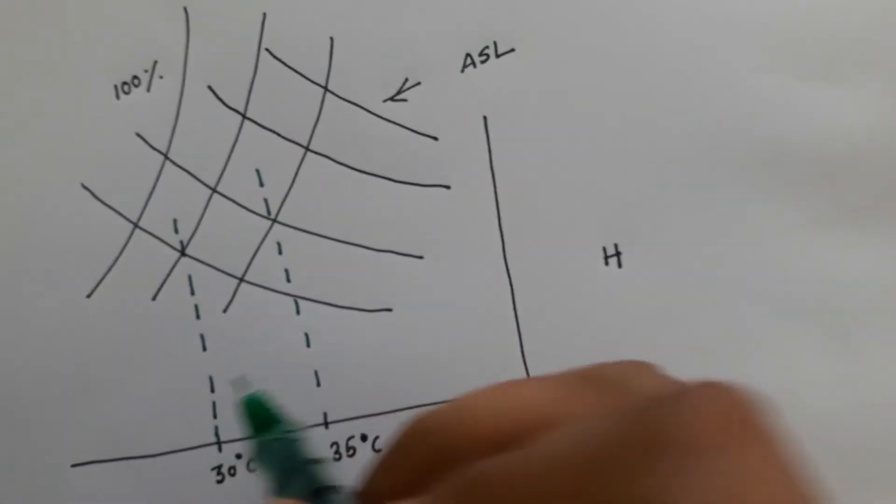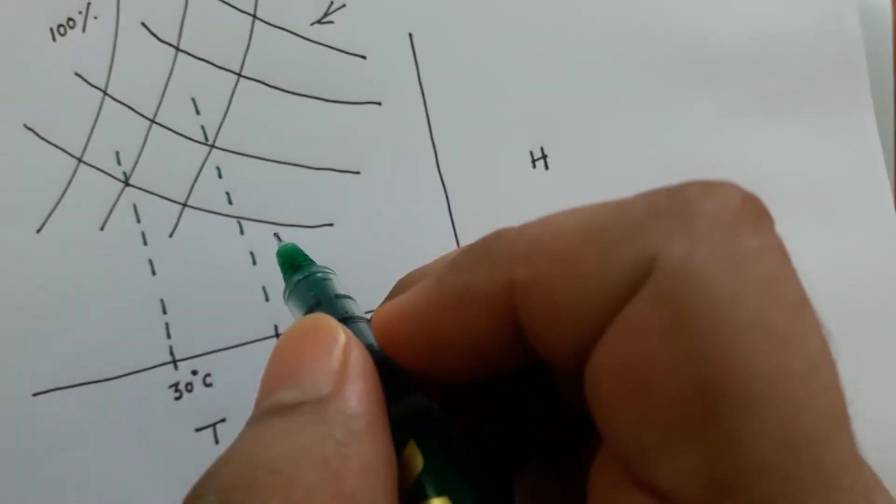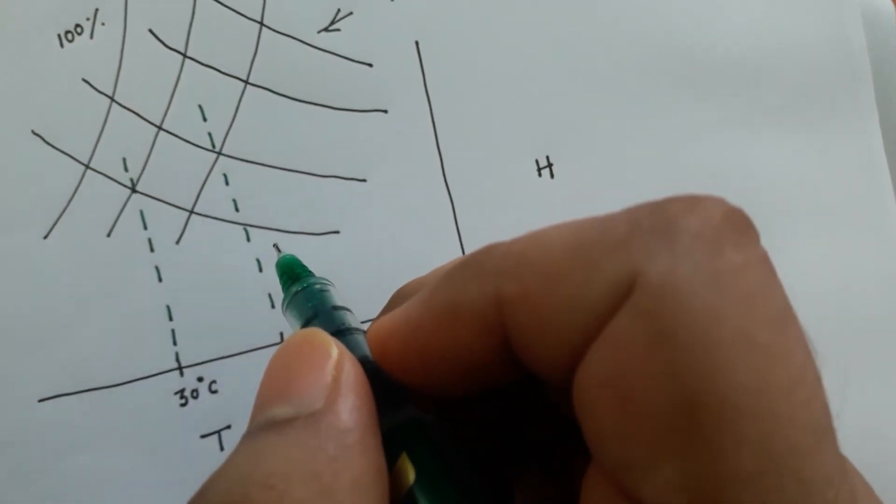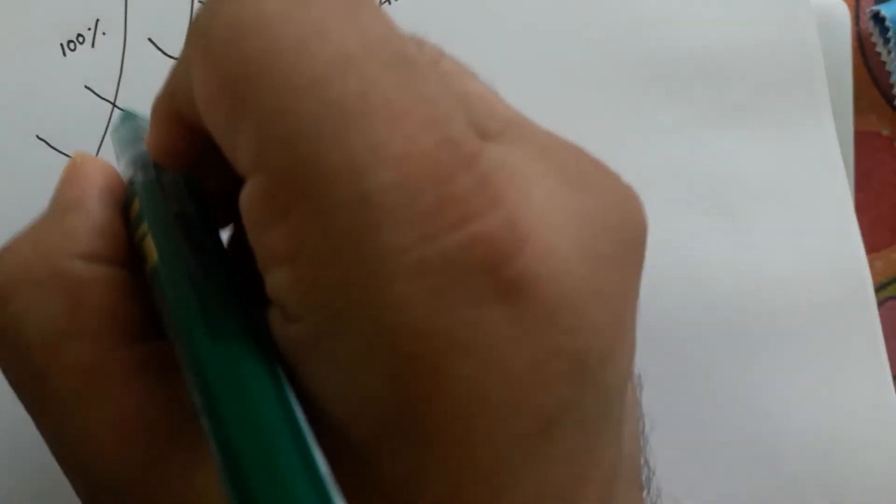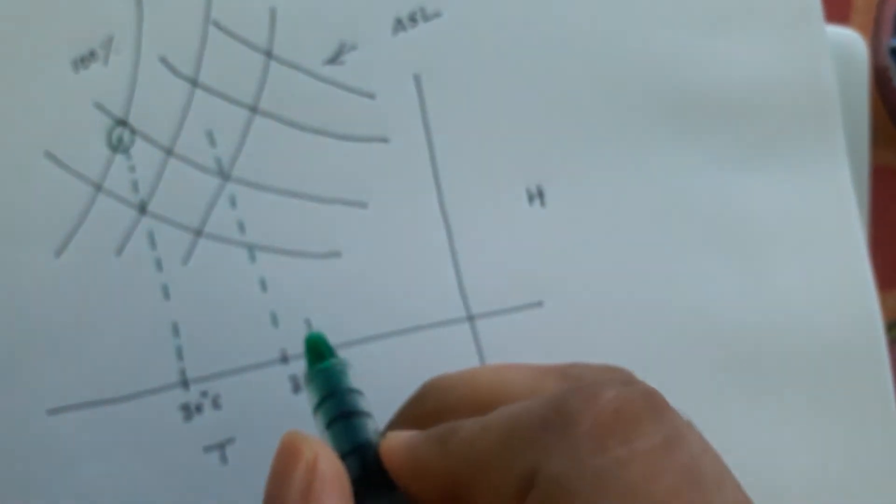Now you already know that wet bulb temperature essentially is the adiabatic saturation temperature. So obviously wet bulb condition corresponds to saturation condition. So you have to draw a vertical line till it intersects the 100% saturation line. Locate that point in the psychrometric chart.